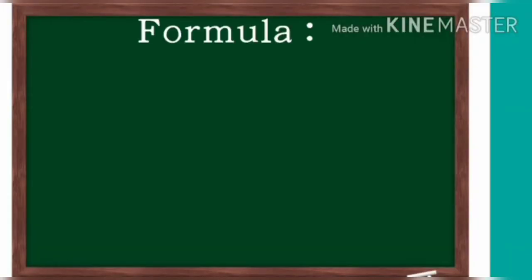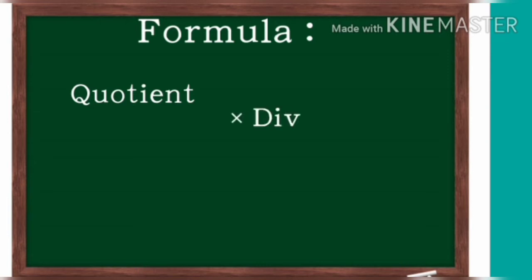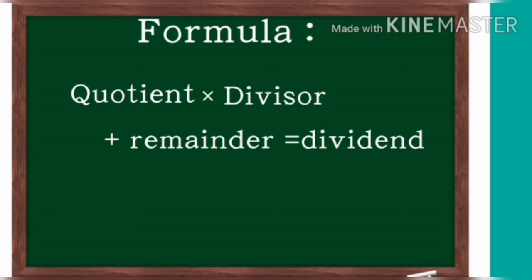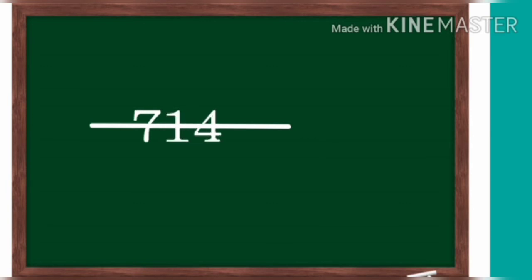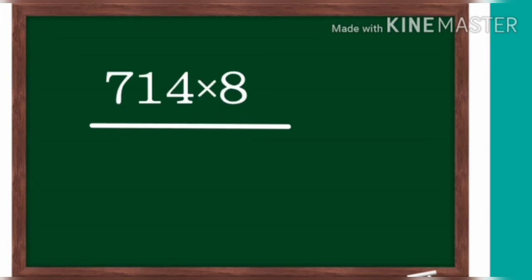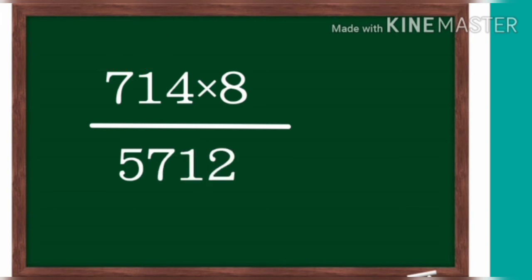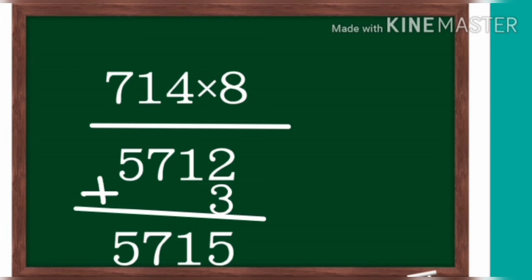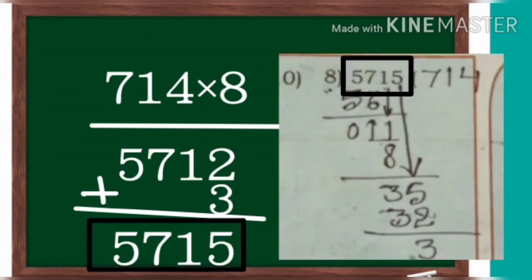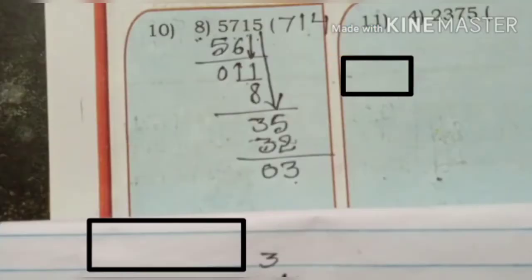We can verify the answer using this formula: quotient multiplied by divisor plus remainder equals dividend. Here 714 is the quotient and divisor is 8. We multiply 714 by 8 — the product is 5712. We add the remainder: 5712 plus 3 is 5715, which equals the dividend.